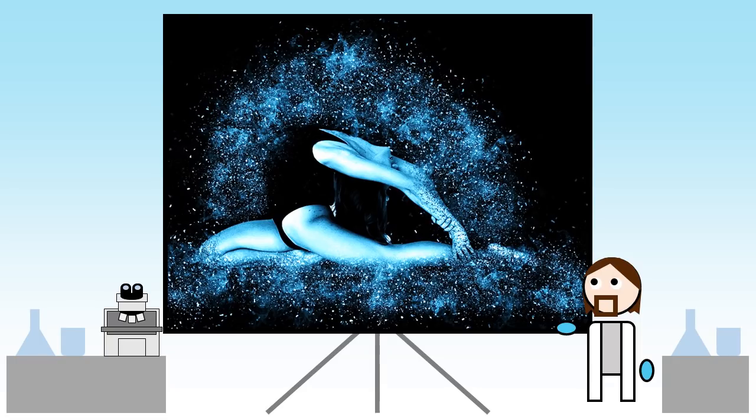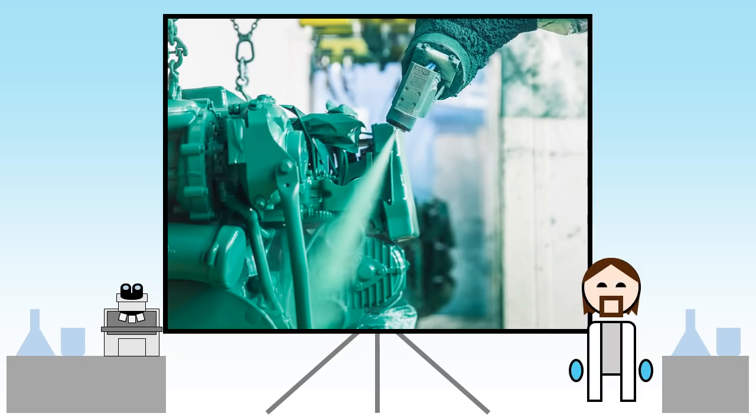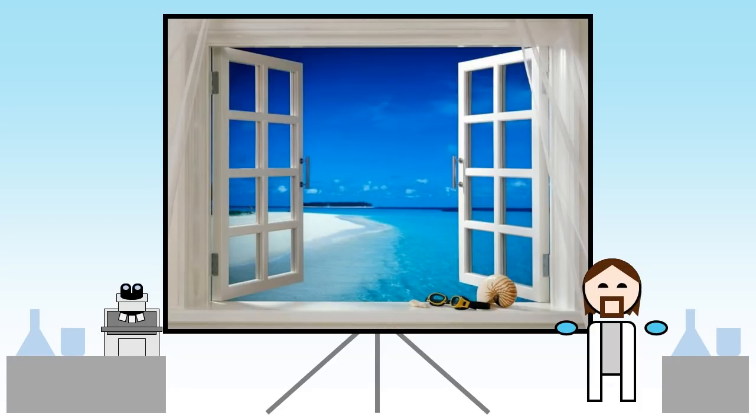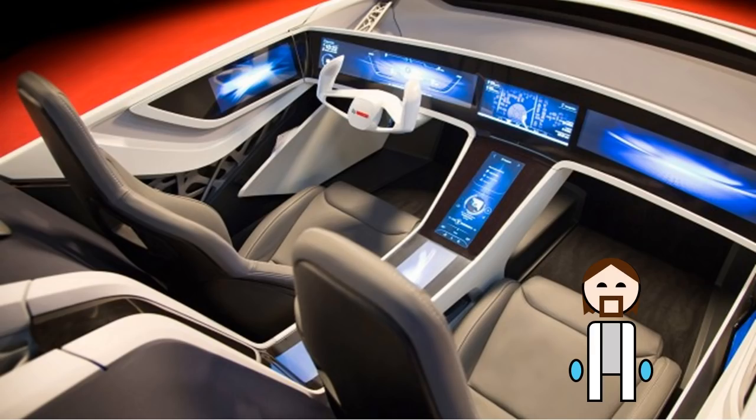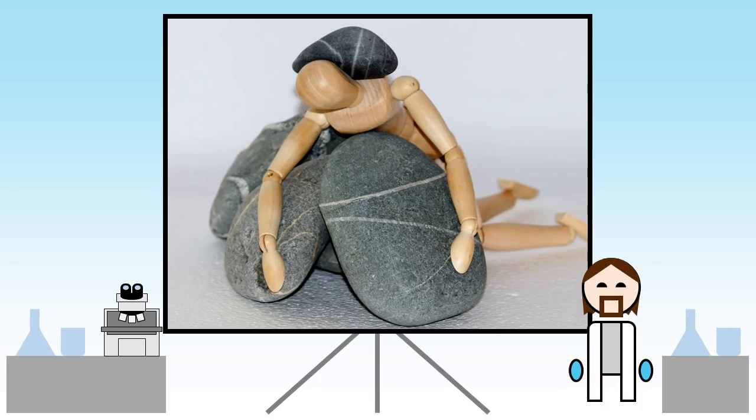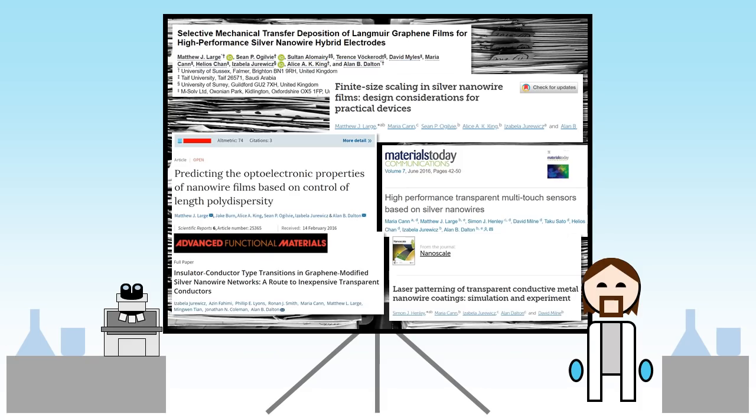When laid down as a thin coating, they can even be sprayed on with an airbrush just like paint. This opens up new possibilities for smart interactive devices that ITO simply struggles to make happen.